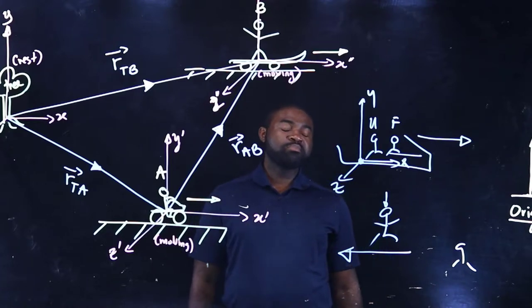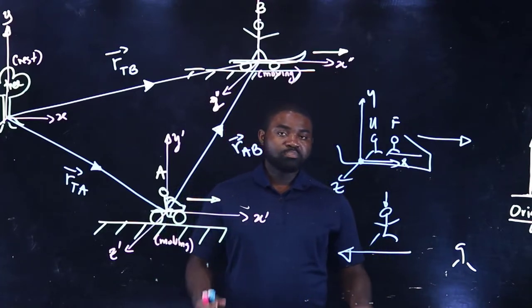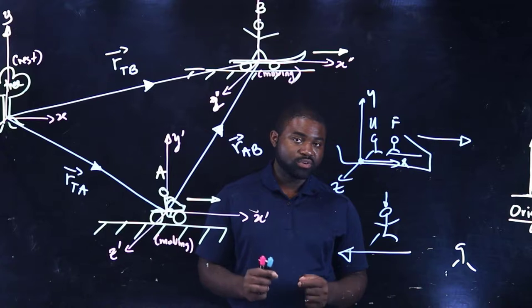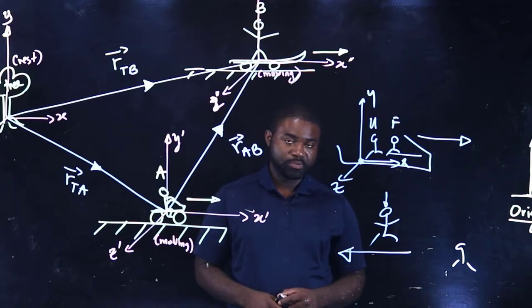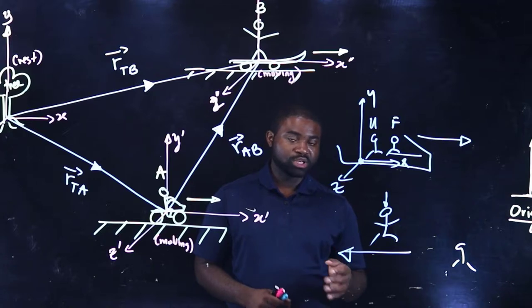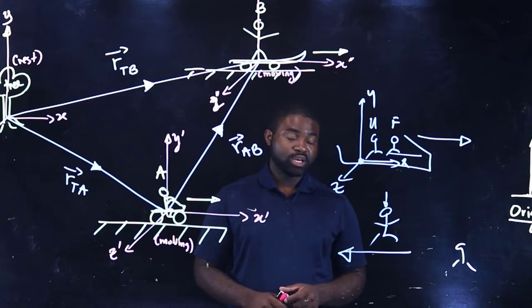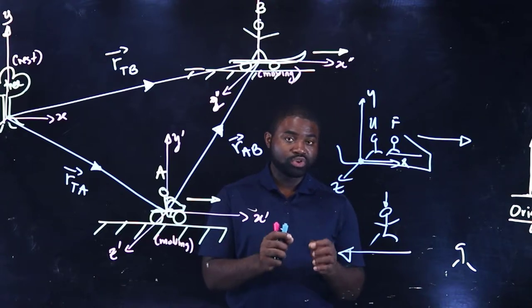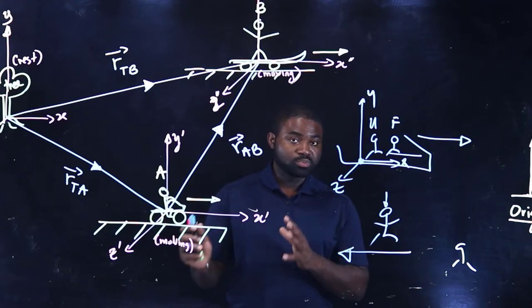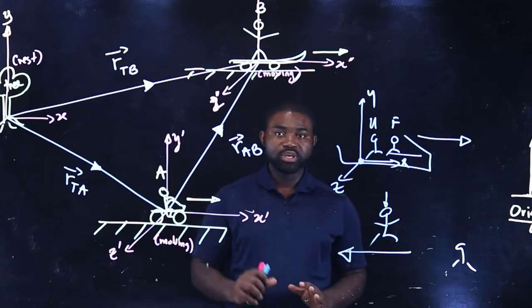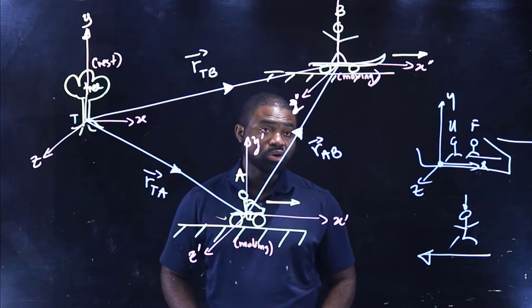Now keep in mind that the position of an object depends on your choice of origin and your reference frame. But the velocity and acceleration of an object really does not depend on your choice of origin — it actually depends on the relative motion between you and the observer. Let me demonstrate what I mean with this illustration on the board.